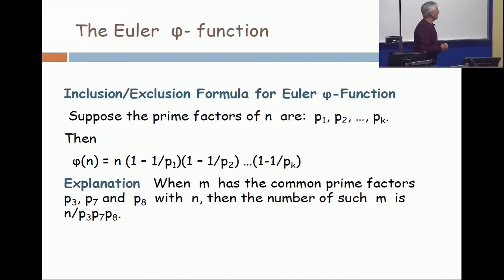What is that counting? And the explanation is at the bottom. This is a for instance. If there were 8 or more prime factors, and you looked at the term where you chose the minus 1/p₃, minus 1/p₇, minus 1/p₈, then the term would be negative, but it would be n/(p₃p₇p₈). And that counts the number of integers which have the prime p₃, the prime p₇, and the prime p₈ in common with n.